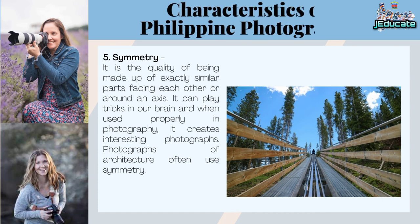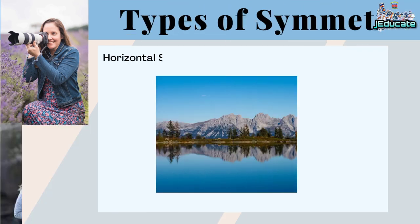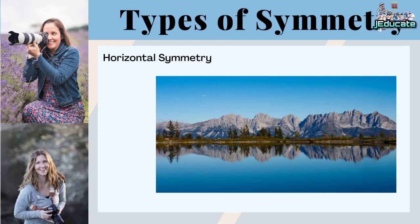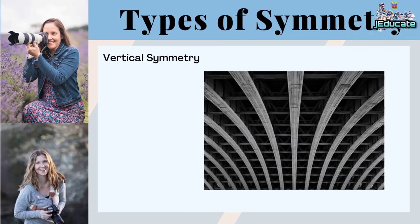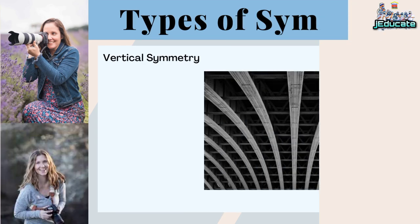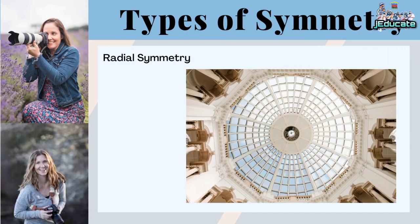Number 5: Symmetry. It is the quality of being made up of exactly similar parts facing each other or around an axis. It can play tricks on our brain, and when used properly in photography, it creates interesting photographs. Photographs of architecture often use symmetry. Types of symmetry include horizontal symmetry, vertical symmetry, and radial symmetry.